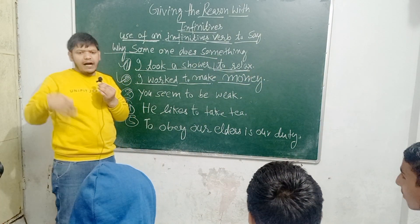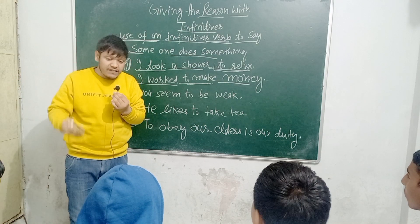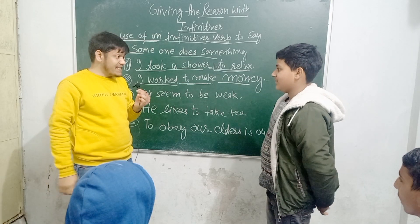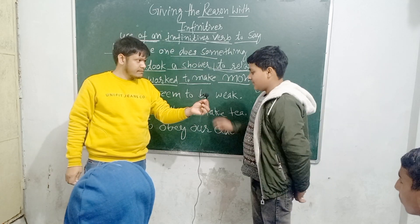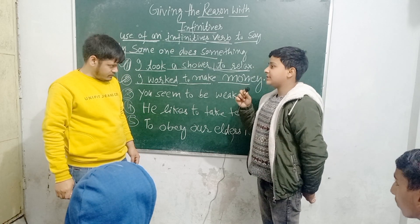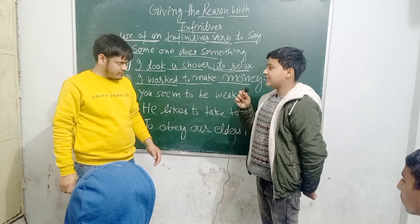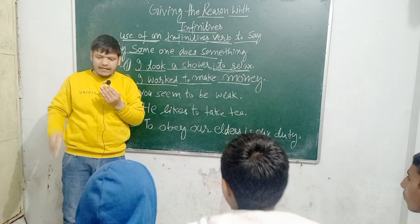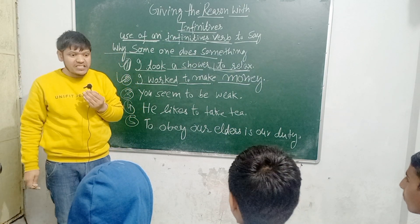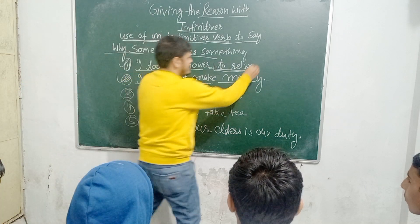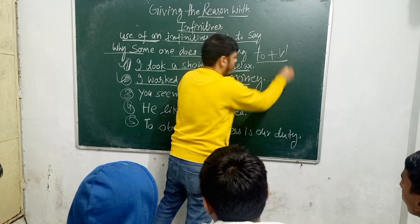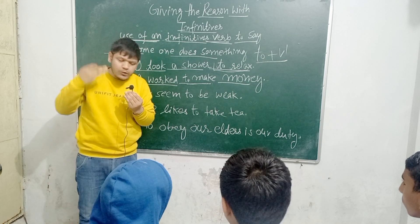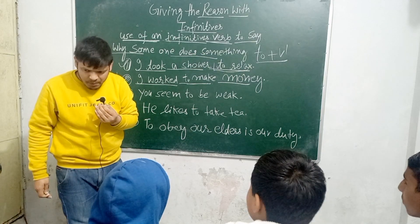Now, what do you mean by infinitive verb? The infinitive consists of two words — 'to' plus the first form of the verb, which is known as the base verb, or V1. This is known as an infinitive verb.